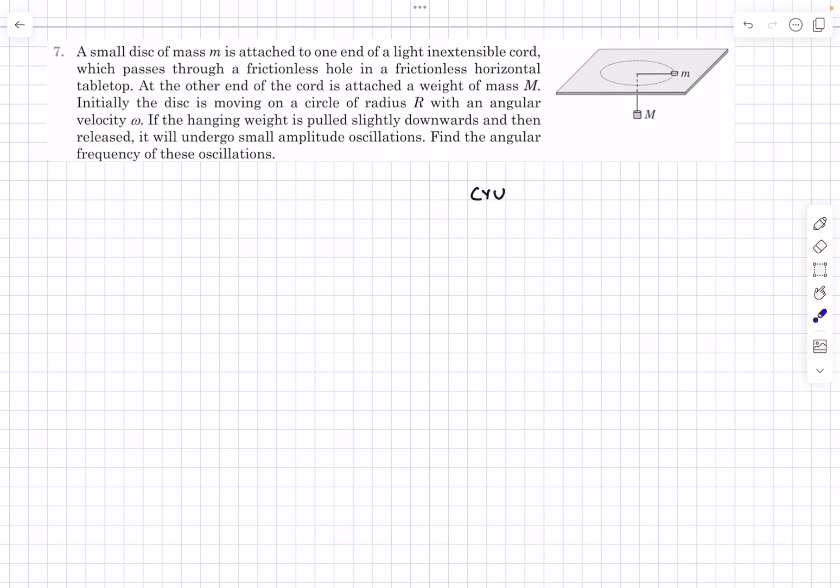So let's read the problem statement. A small disk of mass m is attached to one end of a light inextensible cord which passes through a frictionless hole in a frictionless horizontal tabletop. At the other end of the cord is attached a weight of mass capital M. Initially the disk is moving on a circle of radius R with an angular velocity of omega. If the hanging weight is pulled slightly downwards and then released, it will undergo small amplitude oscillations. So we have to find the angular frequency of these oscillations.